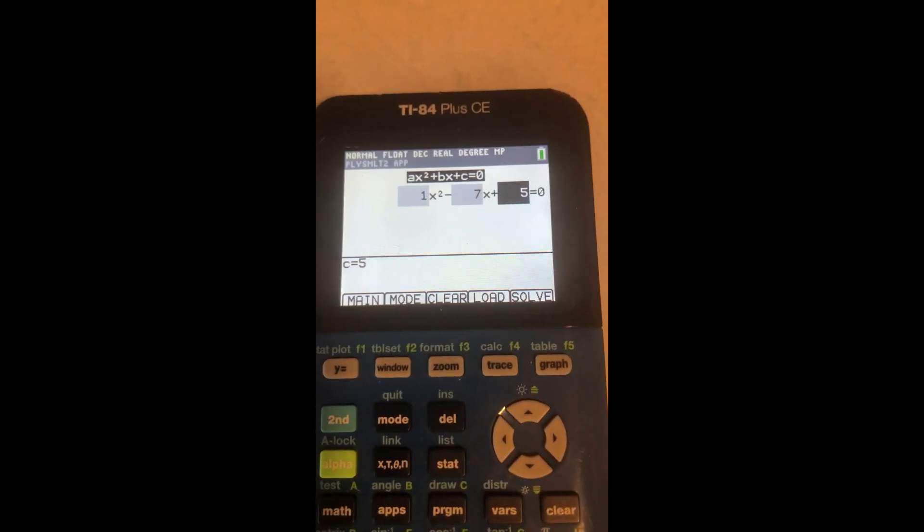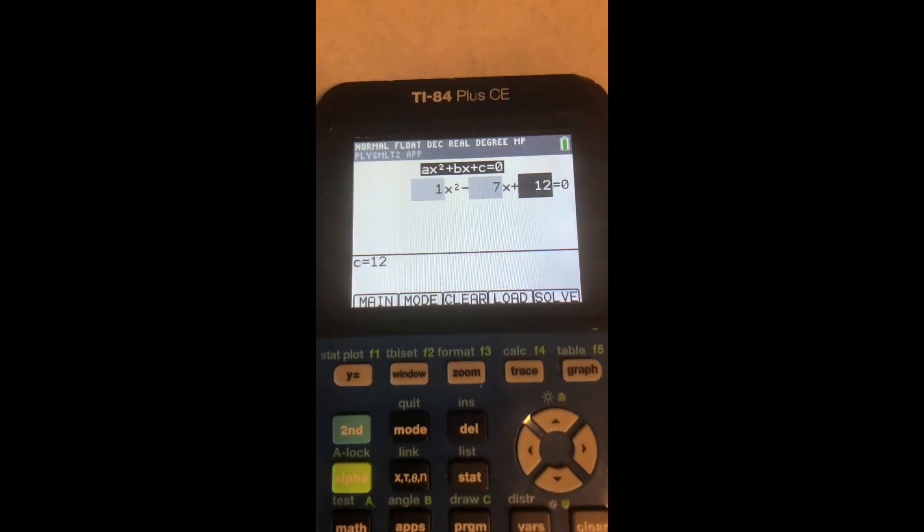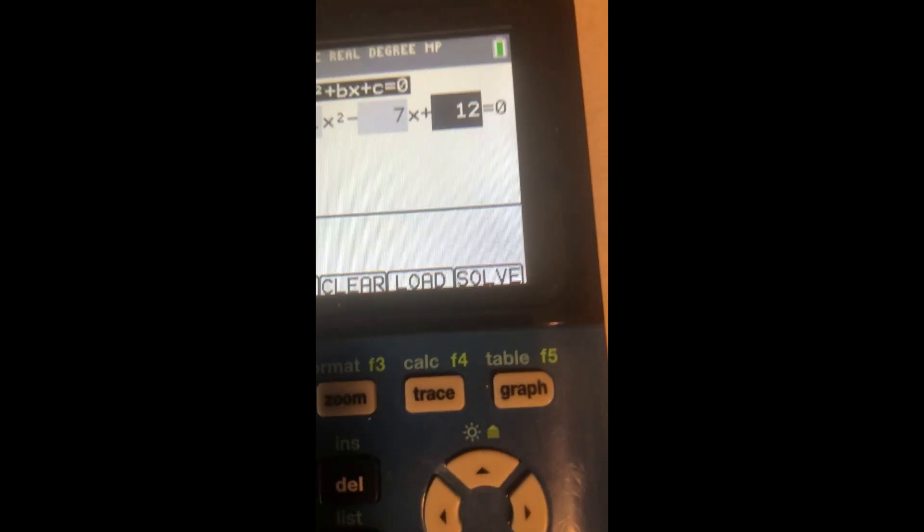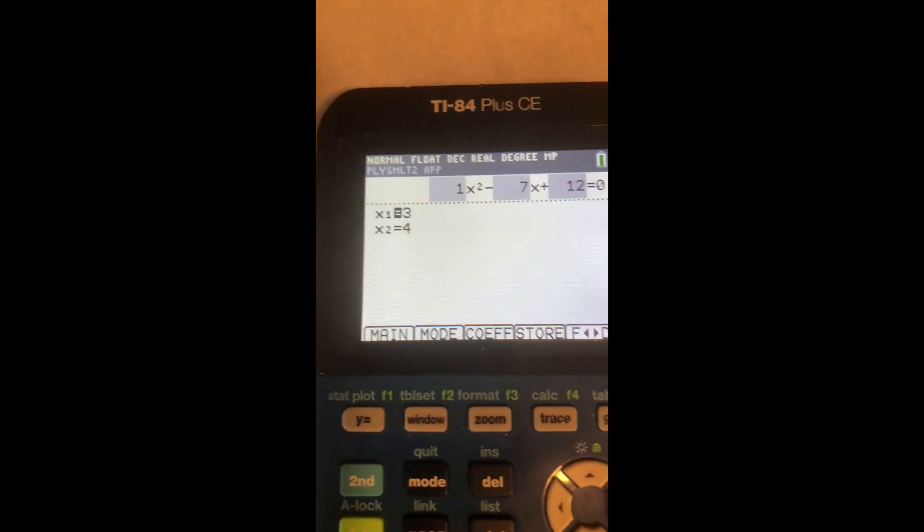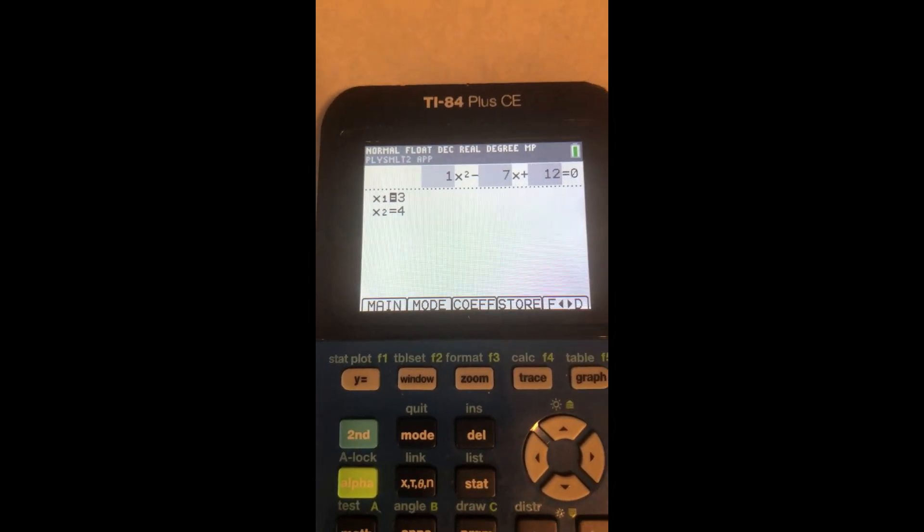Then I had a plus 12, so the plus is already there and I need a 12 and then enter. And all I need to do is press solve by pressing that graph button, and my roots are 3 and 4. That's it, it's that simple.